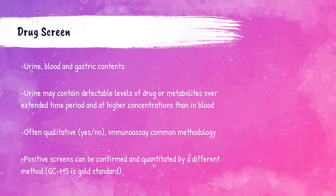Positive screens can then be confirmed and quantitated by mass spectrometry. MS is the most discriminatory of the drug testing techniques. Mass spec is not a testing method done in hospital laboratories — the sample would need to be sent out to a specialized reference laboratory. Mass spectrometry measures the precise molecular mass of ions as determined by their mass-to-charge ratio and is the current gold standard in forensic drug analysis.